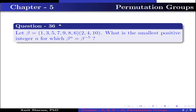Question number 36. Let beta be the permutation having elements (1, 3, 5, 7, 9, 8, 6) and (2, 4, 10). What is the smallest positive integer n for which beta to the power n equals beta to the power minus 5?